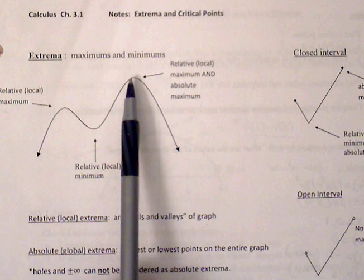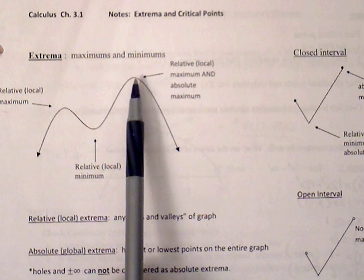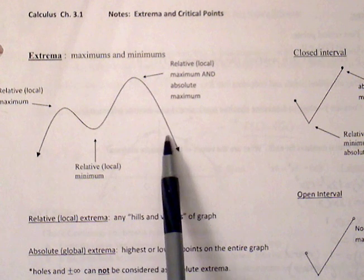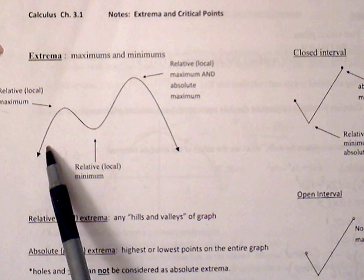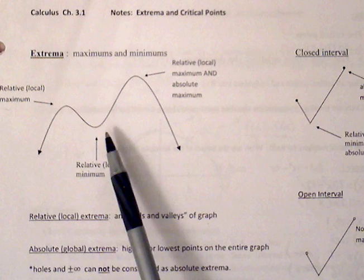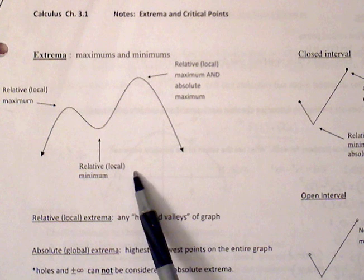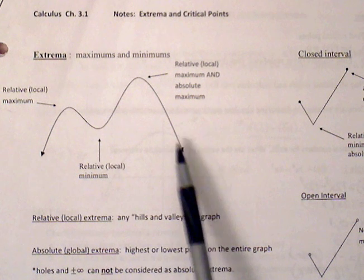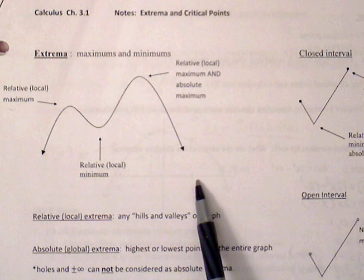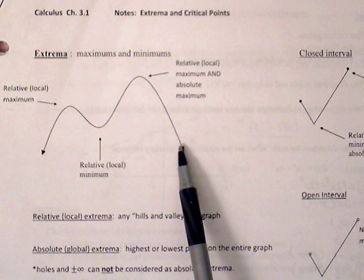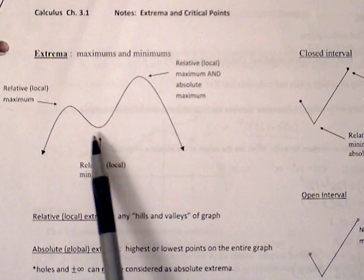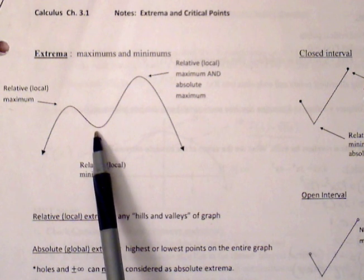This point is a relative maximum because it's a hill, but it's also the absolute maximum because it is the highest point throughout the entire graph. In this case, we don't have an absolute minimum because this graph will go to negative infinity — there's no physical point we can direct to where we'd get an absolute minimum.